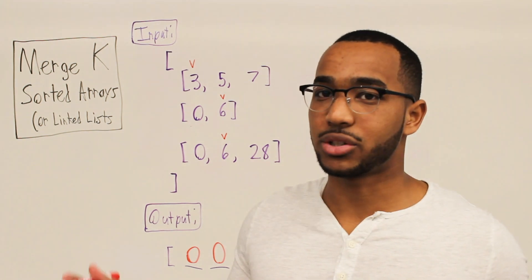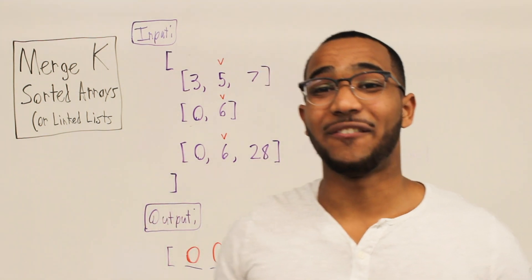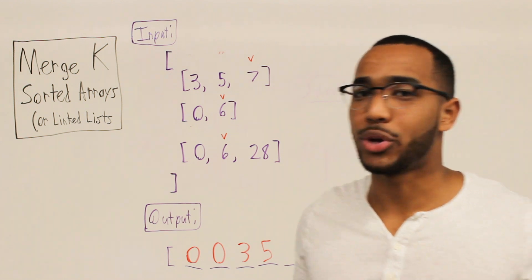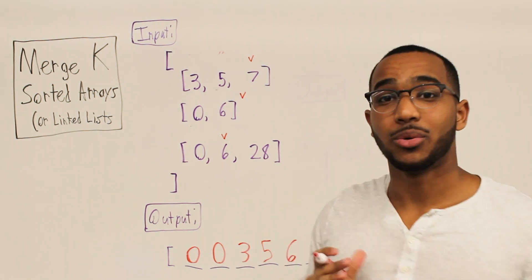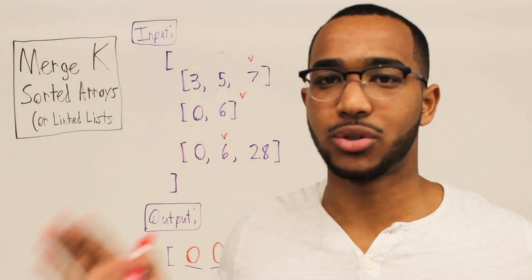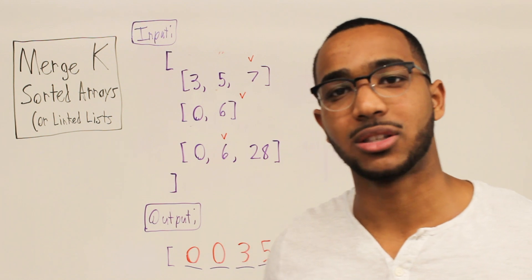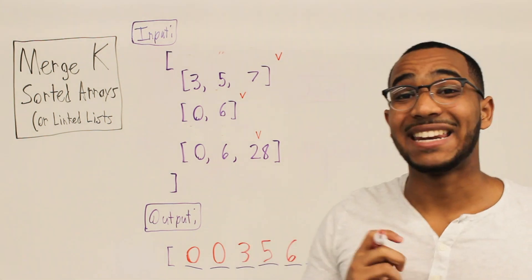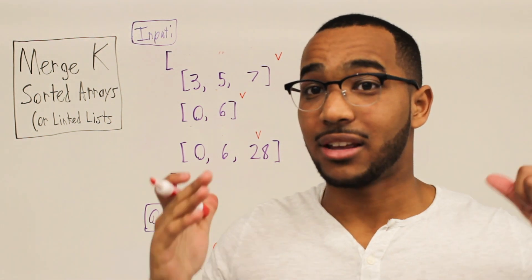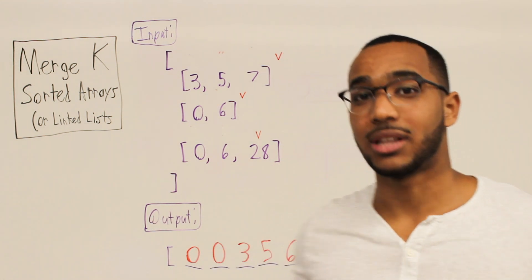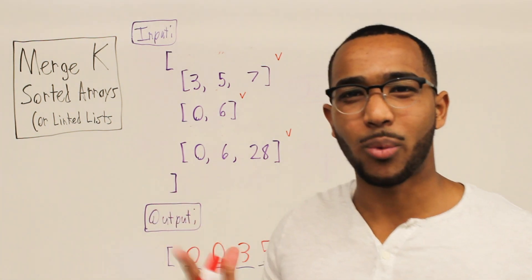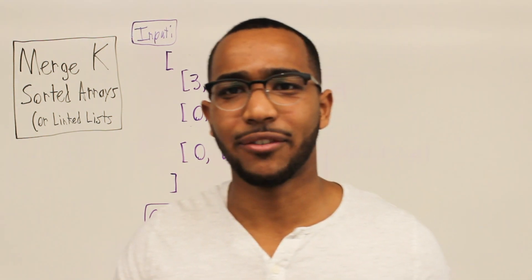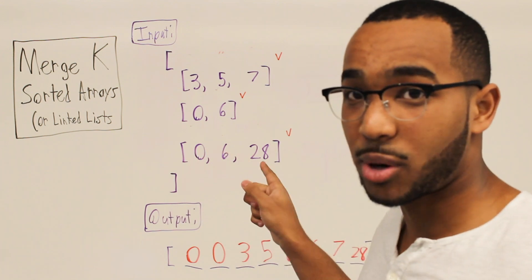We take three from array one — it's the smallest item. Now we're comparing five, six, and six. Five is the smallest item. Then we're comparing seven, six, and six; six is the smallest item — we can take it from array two or three. We've now run out of elements in array two. We need the smallest of six and seven; we take six from array three. Then seven versus 28; we take seven. We just generalized the two-array approach to k sorted arrays — we haven't done anything different.